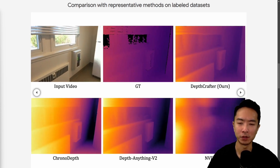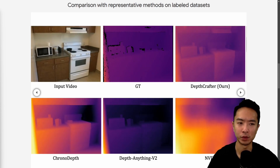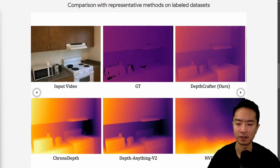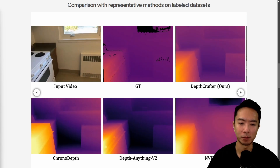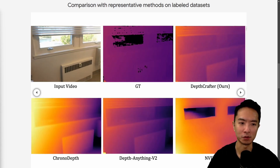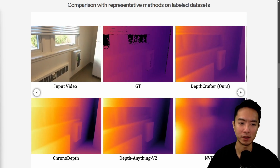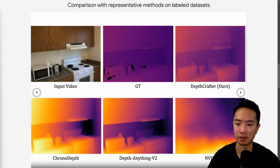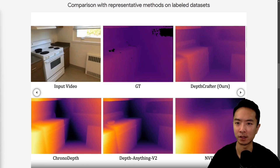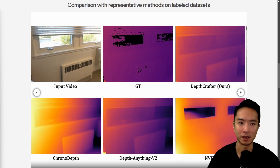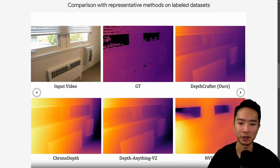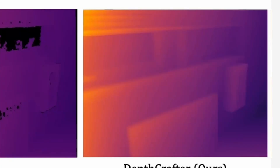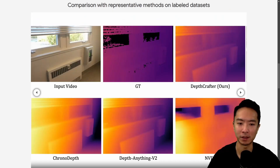One thing to notice is the window area — you can see that sometimes the other models tend to lose details, whereas DepthCrafter can pick it up, especially the area of the blinds. In certain scenes like right here, you can see that DepthCrafter is picking up the blinds much better.